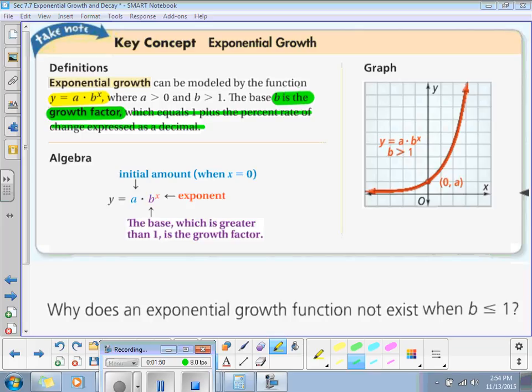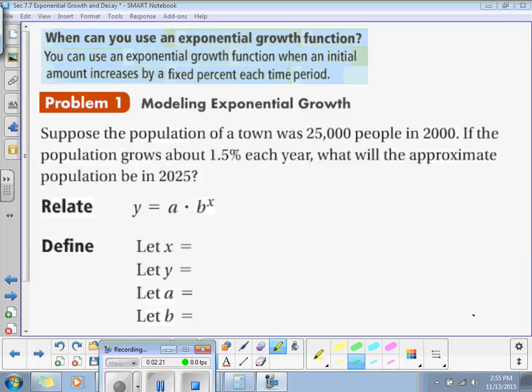Now, the question down here says, why does an exponential growth function not exist when b is less than or equal to 1? Because it's less than 1, it would be decay, so it would be subtracted, it would be going down, it would be decreasing rather than increasing.